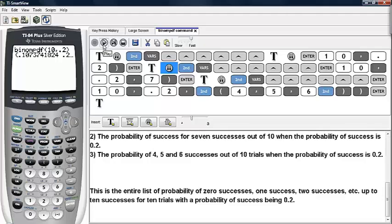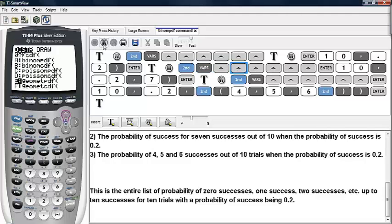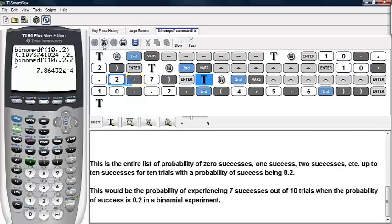Now to answer the second question, we can go back under 2nd and VARS, the distribution menu, scroll until you get to binompdf, and type in the number of trials, the probability of success, and then a comma and a specific trial number, in our case 7. Here we see that the probability of experiencing 7 successes out of 10 trials when the probability is 0.2 is approximately 7.86 times 10 to the negative 4 power, or 0.000786.